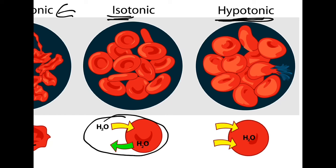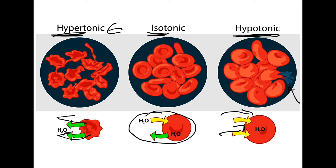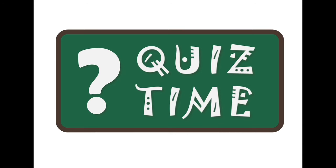'Hypo' means low or less. In a hypotonic solution, since there are more solutes inside the cell, water follows those solutes and rushes into the cell, causing it to burst. To summarize: in a hypertonic solution, water leaves the cell; in an isotonic solution, water is evenly exchanged; and in a hypotonic solution, water rushes in.